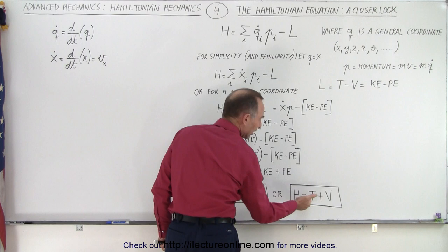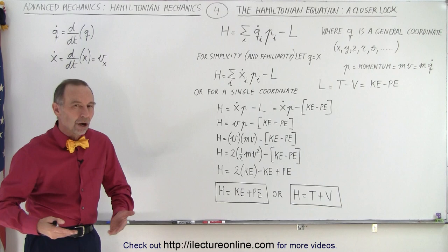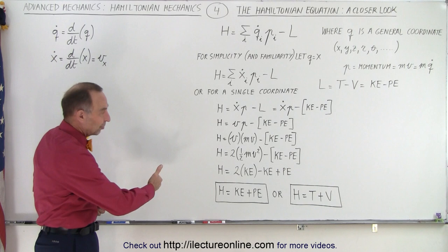You can also write it like this. If you remember that T is the kinetic energy and V is the potential energy, the Hamiltonian is simply equal to the kinetic energy plus the potential energy. So essentially, the Hamiltonian is the total energy of the particle or the system or whatever it is that we're looking at.